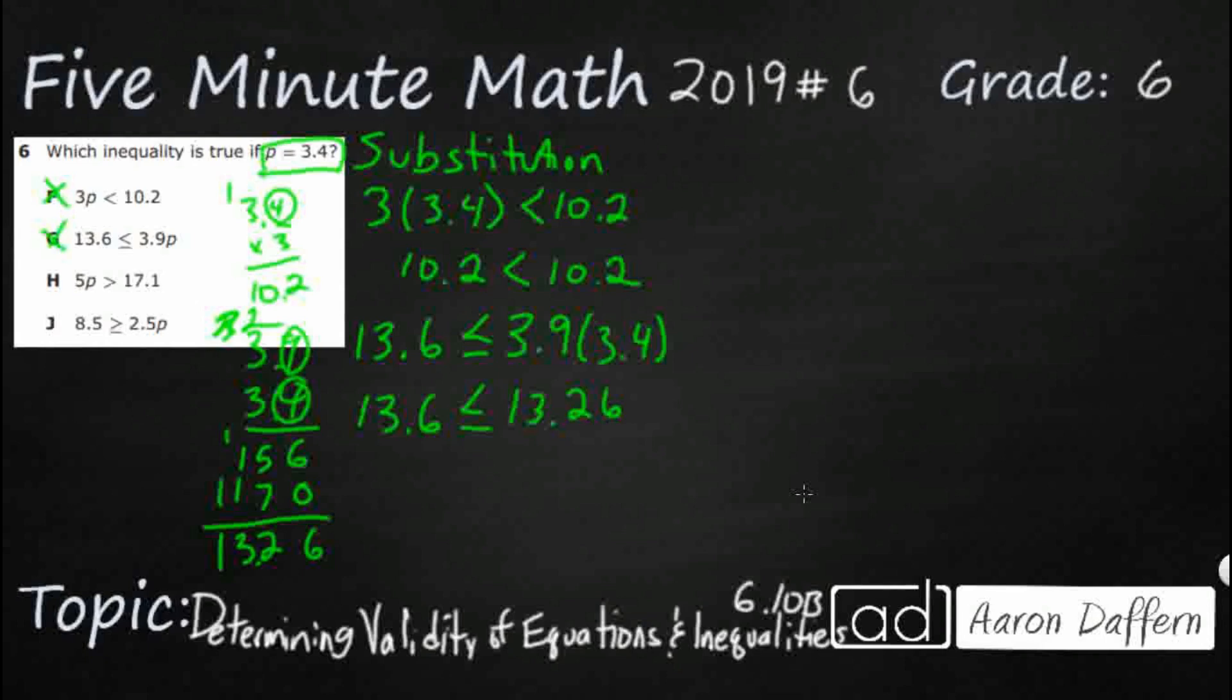Let's hope it's H or J. Let's try 5 times 3.4 is greater than. So it can't be equal. It just has to be greater than. 17.1. So let's see what that looks like. 3.4 times 5. That's 20. 15. That's 17. Bring that decimal back in. Oh, look at that. 17.0 is greater than 17.1. No, it is not.